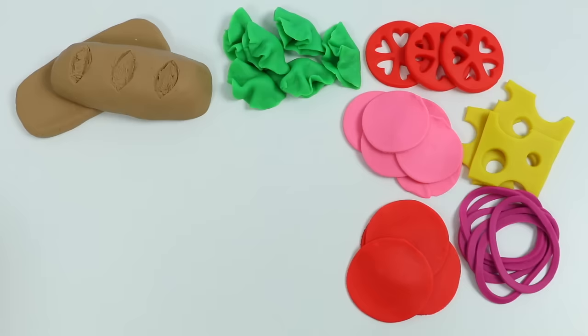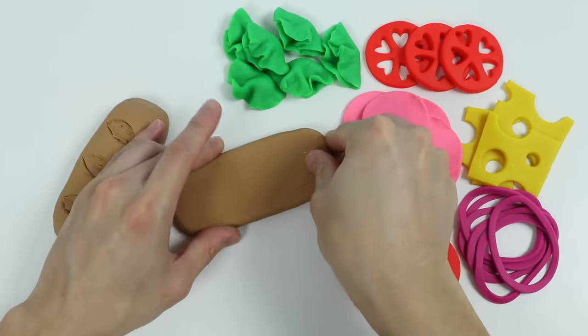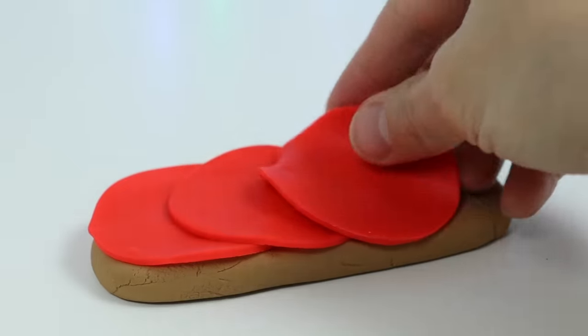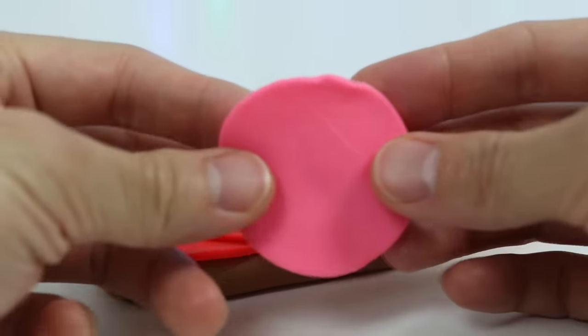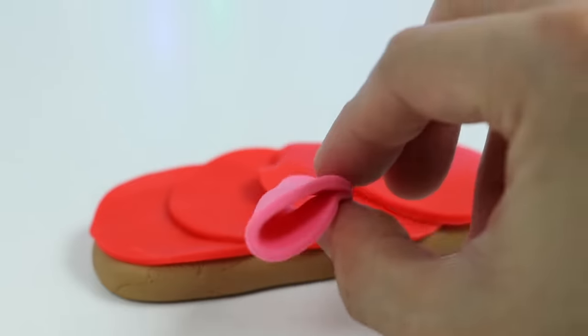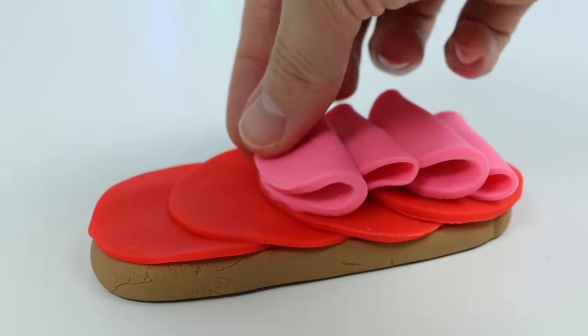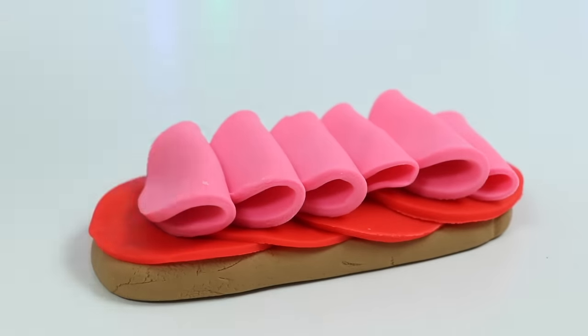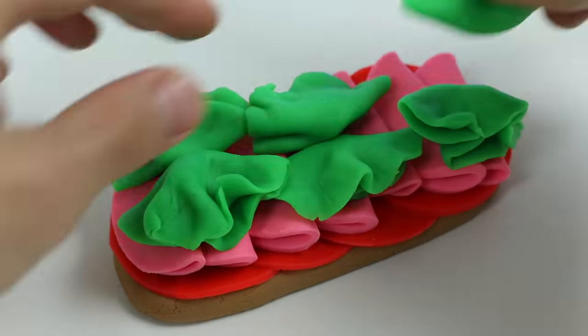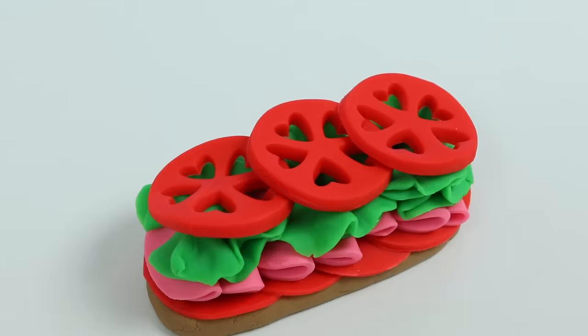All right, we made all of our ingredients. Now let's assemble our Play-Doh sandwich. Start with the pepperoni slices. Now let's add the ham slices on top, but make sure they're folded like this. Now let's add the lettuce. Now the tomato slices.